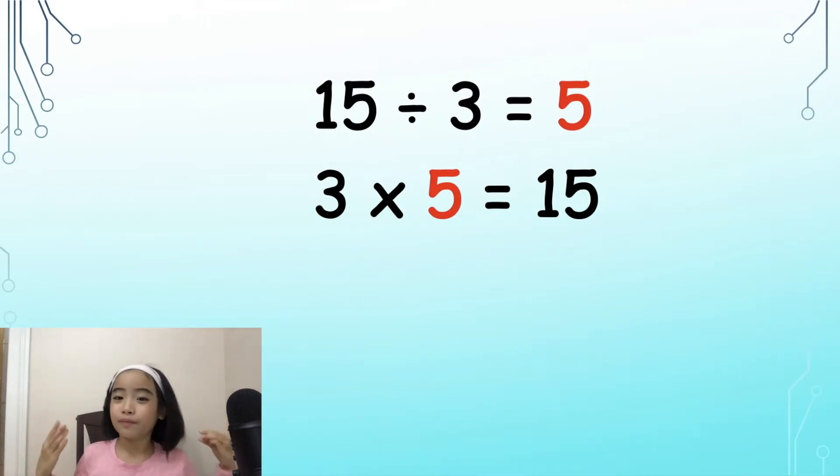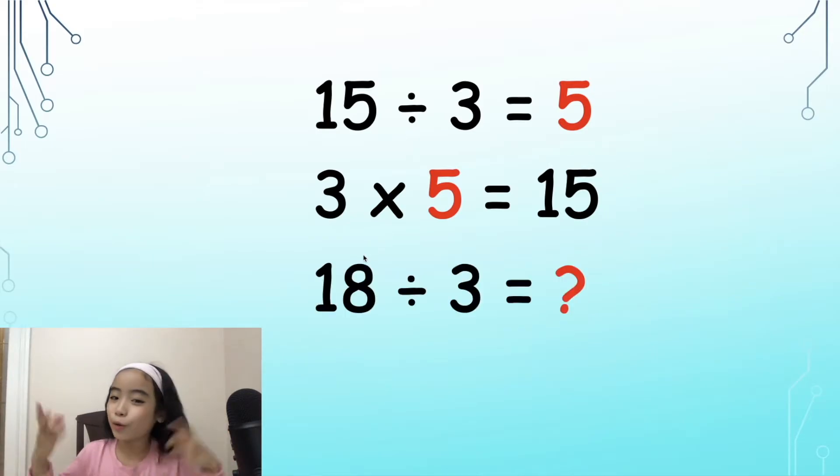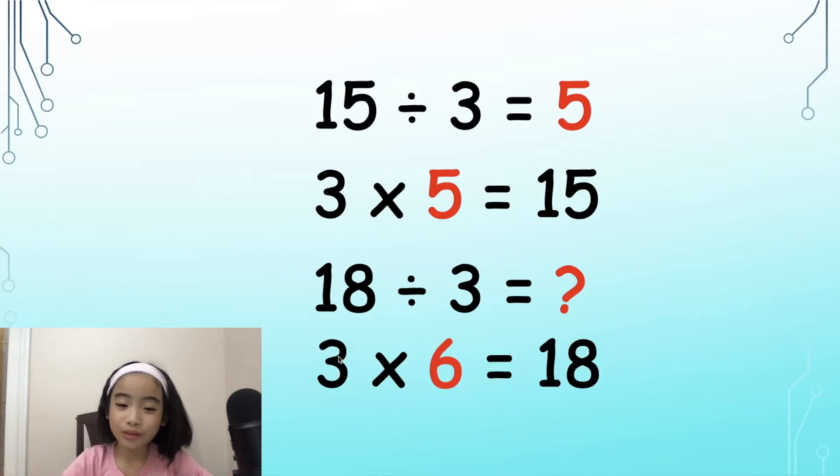So division is the inverse of multiplication. Now, let's do another example. What is 18 divided by 3? Well, we know that 3 times 6 equals 18. So the answer is 6.